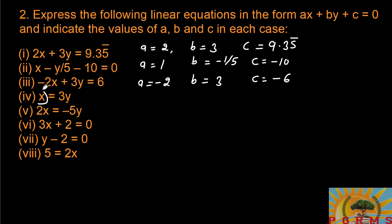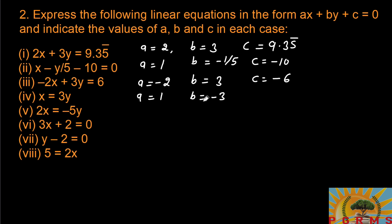Now here, x has coefficient 1, so a equals 1. Since 3y is on the right side, bringing it to the left makes it minus 3y. So b equals minus 3, and since there is no constant term, c equals 0.